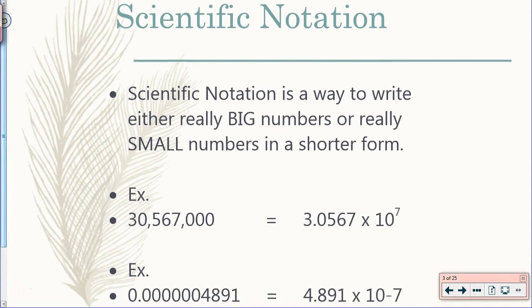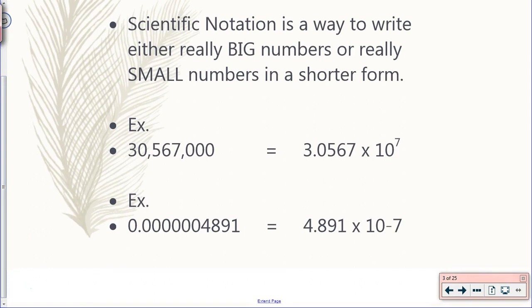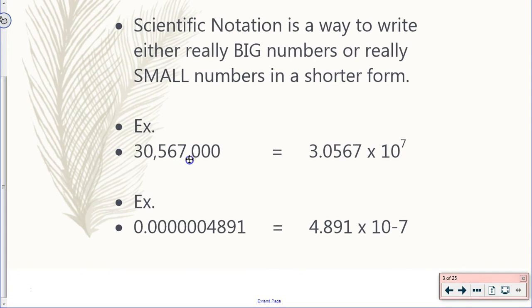Scientific Notation is a way to write either really big numbers or really small numbers into a shorter form that's easier to use. This can help show us that some numbers might have fake zeros that we don't necessarily know. The fake little zeros that we don't necessarily know if they actually exist or not, we can get rid of them like in the first example. The three zeros at the end actually disappear.